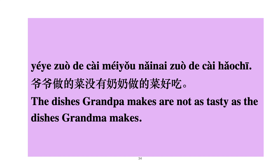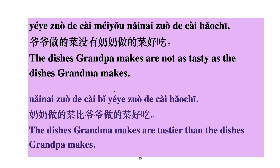爷爷做的菜没有奶奶做的菜好吃 — The dishes Grandpa makes are not as tasty as the dishes Grandma makes. So you can see: 奶奶做的菜比爷爷做的菜好吃 — The dishes Grandma makes are tastier than the dishes Grandpa makes.